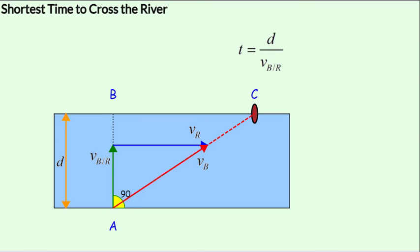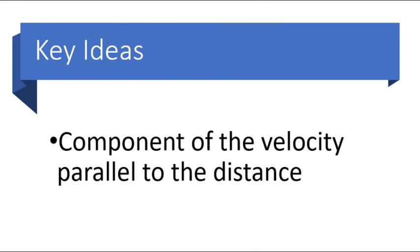The time taken would be d divided by vb_r. To obtain the time required to cross a river, we look at the y-component of the velocity of the boat with respect to the ground. We know the perpendicular distance across the banks of the river, and in the absence of acceleration, the time is that distance divided by the y-component of the velocity.